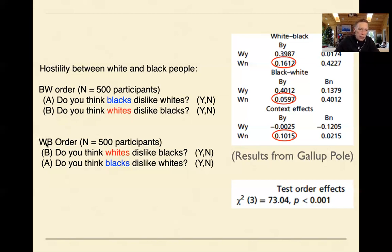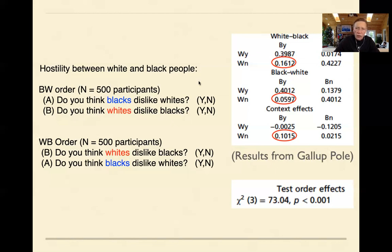Another 500 people got it in the white-black order — first asked 'Do you think whites dislike blacks?' and then 'Do you think blacks dislike whites?' We think of this as a perspective-changing problem. In the black-white order, when you first ask about blacks, you have to think from a black person's perspective. Then you change perspective and put yourself in the white person's shoes. This kind of question requires changing perspectives.